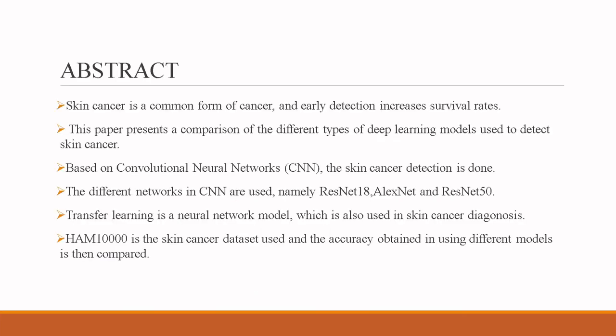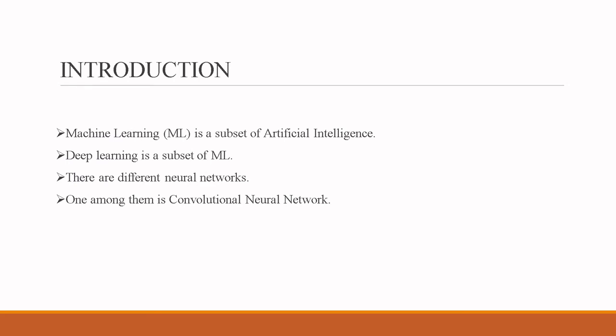Skin cancer is a common form of cancer, and early detection increases survival rates. It is seen that above 52% of people are affected by skin cancer every year. This paper presents a comparison of different types of deep learning models used to detect skin cancer, based on convolutional neural networks. The models used are ResNet-18, AlexNet, and ResNet-15. Transfer learning is also used in skin cancer diagnosis. The HAM10000 skin cancer dataset is used and the accuracies obtained in different models are compared.